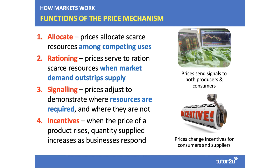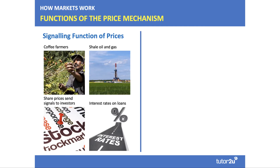The price mechanism also has a rationing function: prices serve to ration scarce resources particularly when demand outstrips supply. The mechanism has an important signaling function — prices adjust to demonstrate where resources are required and where they're not. Changes in prices send signals and therefore change the incentives for both producers and consumers, so the signaling function comes about as a result of changes in market price.